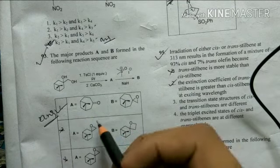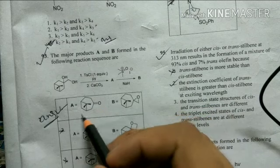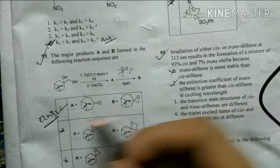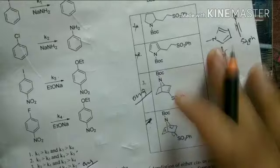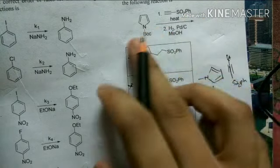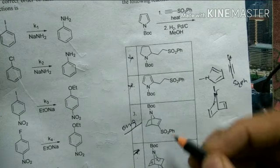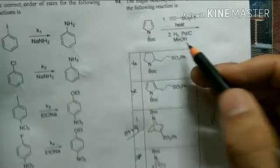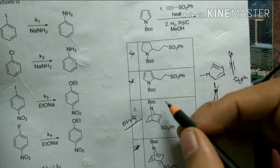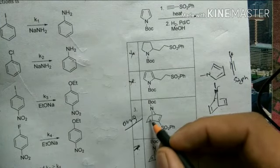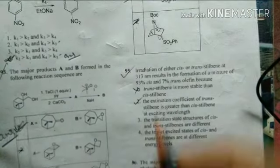The next question is a rearrangement/fragmentation reaction — a copy-paste question from Clayden. You get product A, and then the sulfur ylide attacks to give option 1 as the correct answer. After that, a Diels-Alder reaction is performed, giving a compound with two double bonds. Treatment with palladium on carbon in methanol chemoselectively reduces only the non-conjugated double bond, giving option 3 as the correct answer.